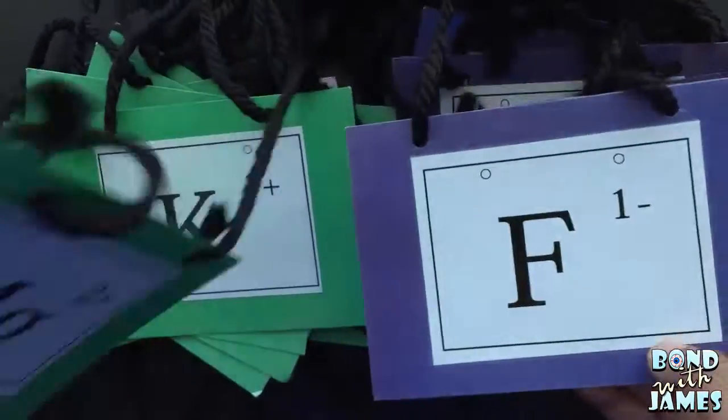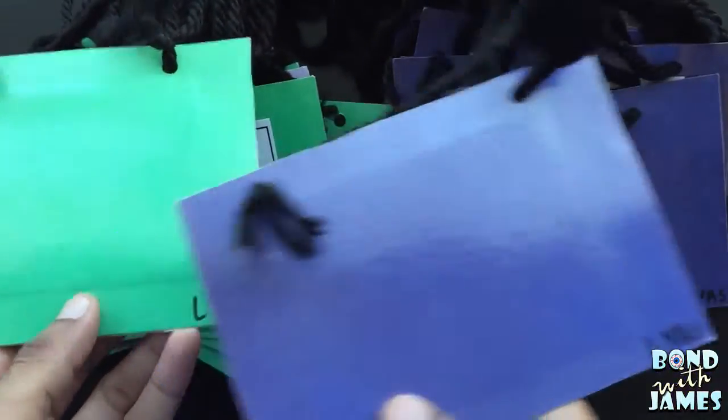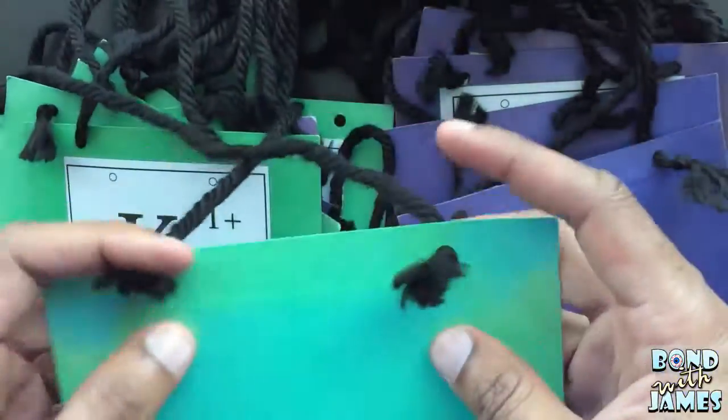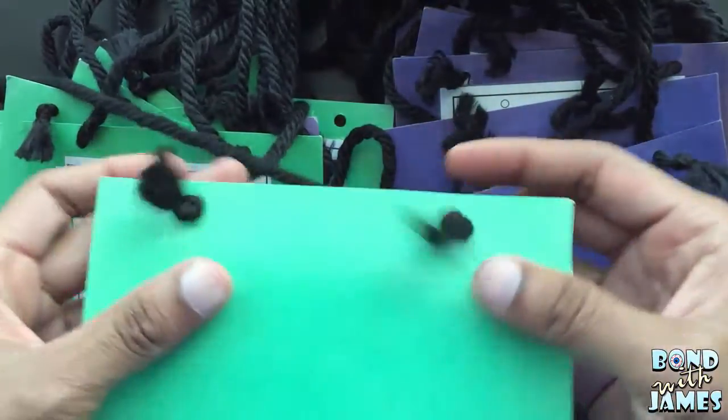I went ahead and wrote my name on the back and then laminated all the sets. Finally, I hole punched the sets and attached yarn to create an ion necklace.